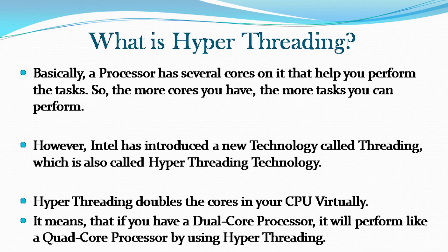What is hyper-threading? Basically, a processor has several cores on it that help you perform tasks. The more cores you have, the more tasks you can perform. However, Intel has introduced a new technology called threading, which is also called hyper-threading technology. Hyper-threading doubles the cores in your CPU virtually. It means that if you have a dual-core processor, it will perform like a quad-core processor by using hyper-threading.